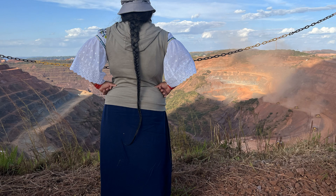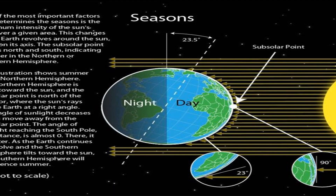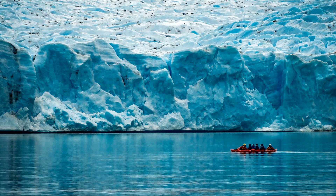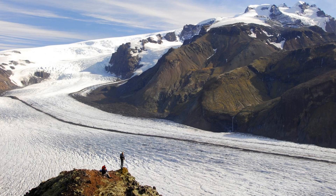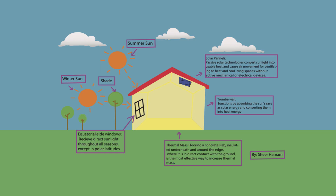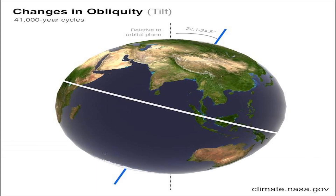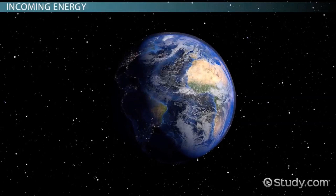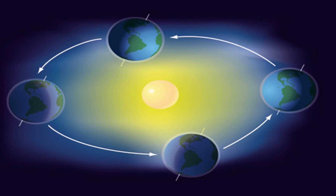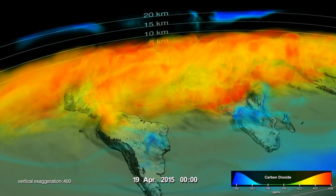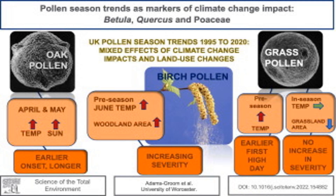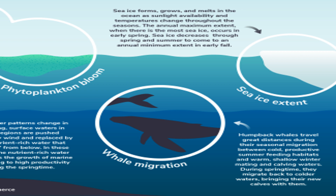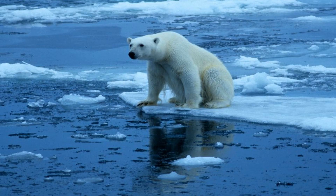The Earth's orbit is not a perfect circle, but rather an elliptical shape, meaning that at certain points in its orbit the Earth is closer to the sun, while at other points it is farther away. When the Earth is closer to the sun, it receives more solar radiation, resulting in slightly warmer temperatures in the hemisphere experiencing summer. Conversely, when the Earth is farther from the sun, it receives less solar radiation, leading to slightly cooler temperatures in the hemisphere experiencing winter. While axial tilt is the primary factor influencing seasons, the influence of distance further contributes to the intricacies of seasonal changes.